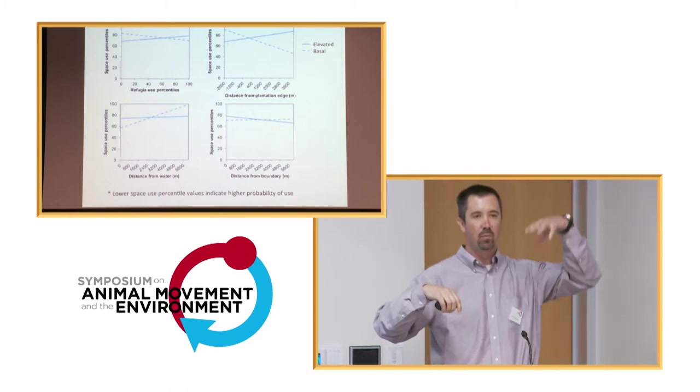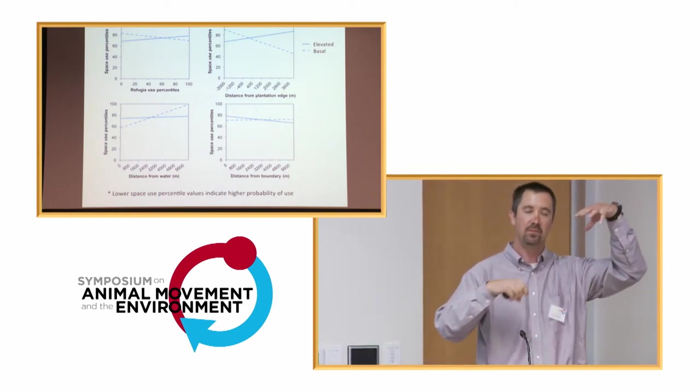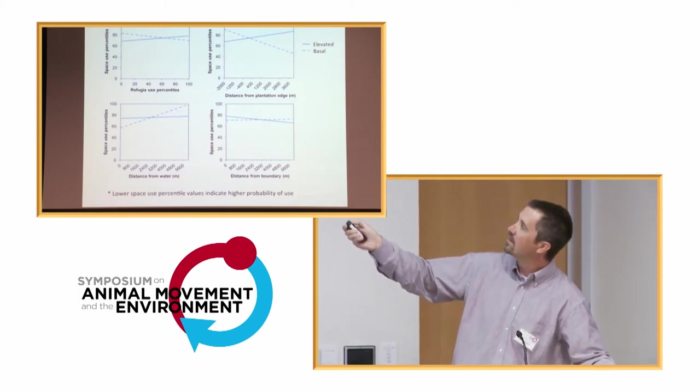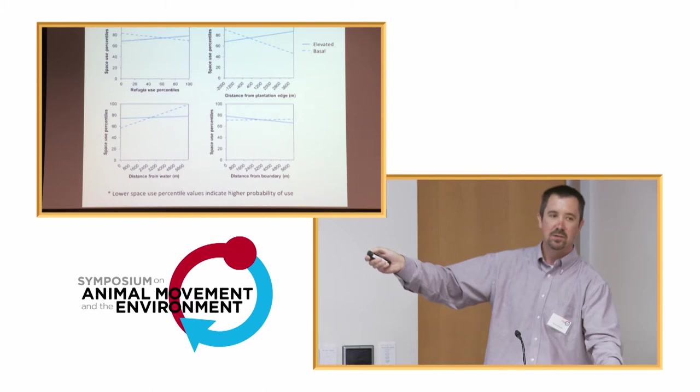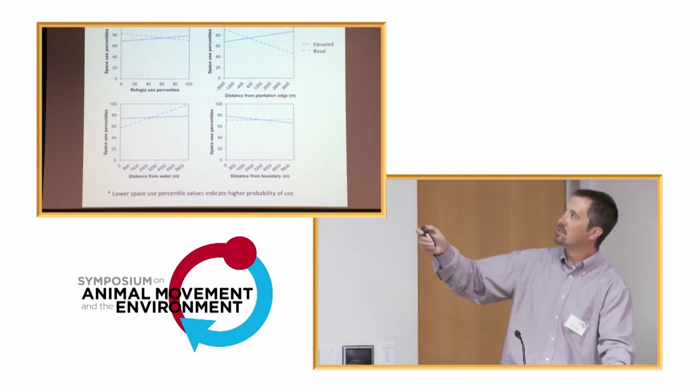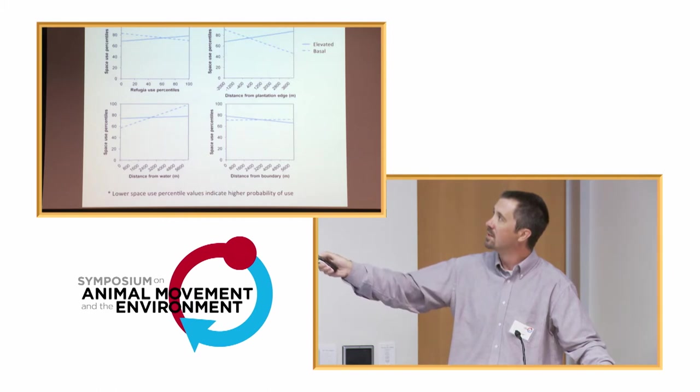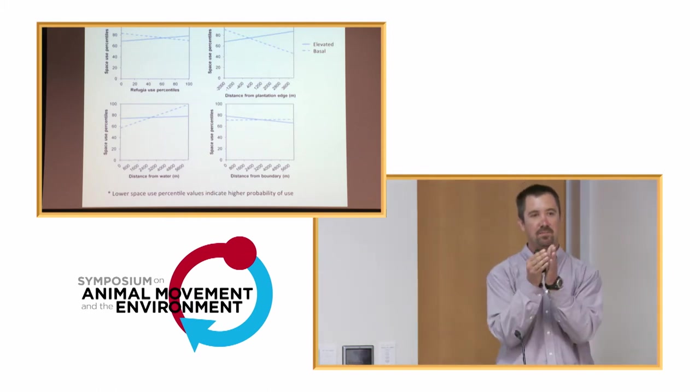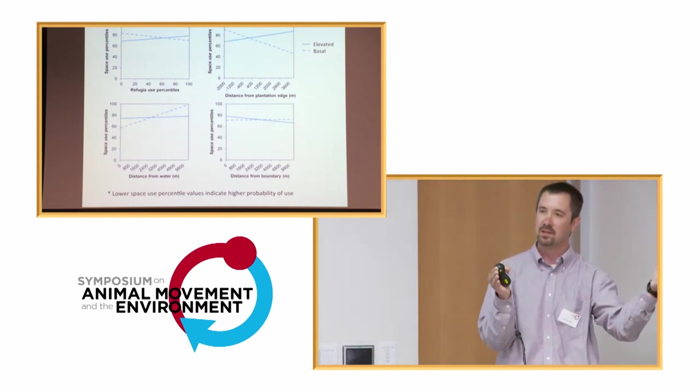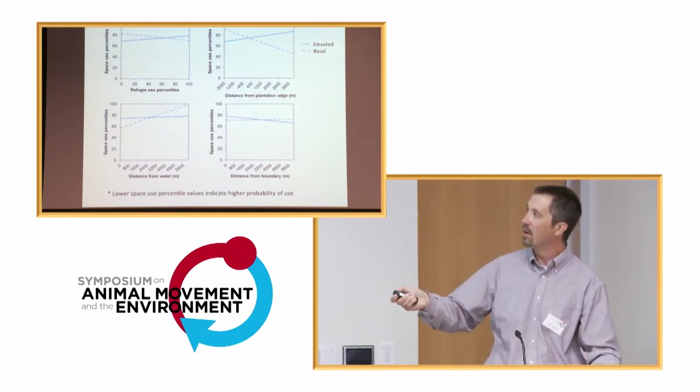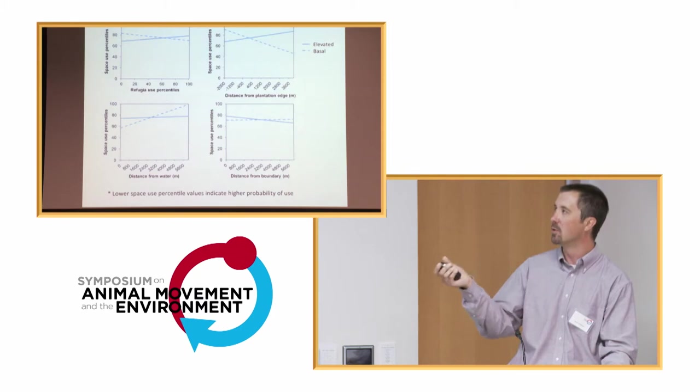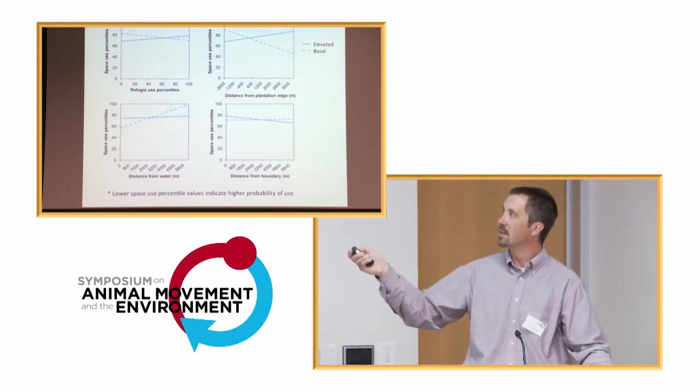I'll try to explain this a little bit better graphically here. The key thing to know is this is space use percentile on the y-axis. And for these, lower values are better. So the upper 1% of utilization distribution is the really high use stuff. The lower 99% are kind of at those tails. And so lower values are better. When they're in the elevated physiological states here with that solid bar, they're much more likely to use refugia. When they're in the basal, conversely, they're using areas away from refugia. Distance to plantations is a similar relationship. They're using areas, so notice this goes into negative values - that means this value was basically taken from the edge of the plantation. So they're choosing areas way deep into the plantation when they're in this elevated physiological state. They're more likely to move away from that when they're in the basal.